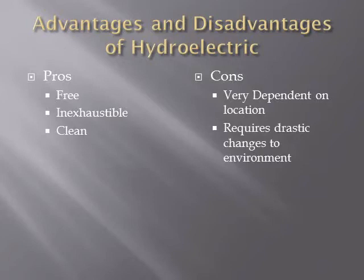Hydroelectric also requires drastic changes to the environment. When you build a dam, you turn what wasn't a lake into a lake. For example, off I-90 near the pass, in summer you can see dead cut-down trees and stumps, and in winter there's a giant lake there — it used to be a forest. The initial cost is also very high, though it keeps producing energy afterwards.